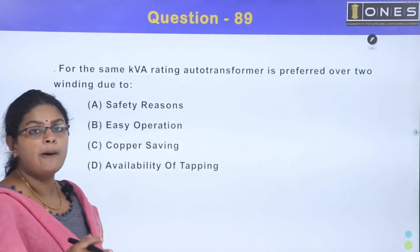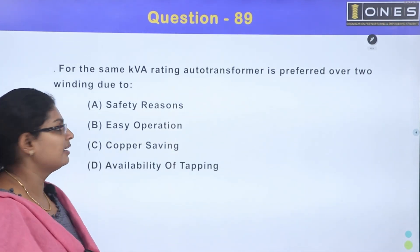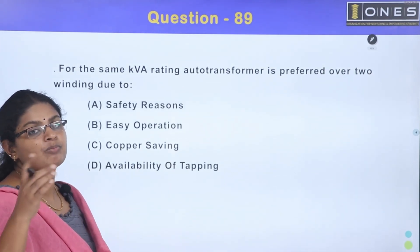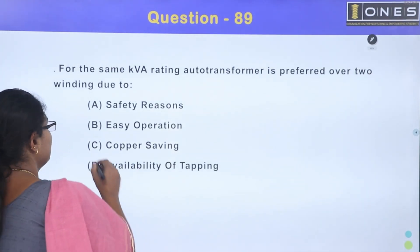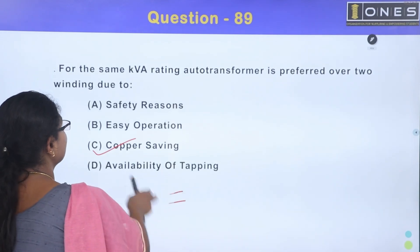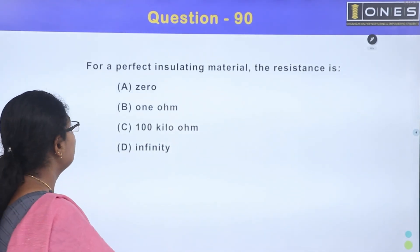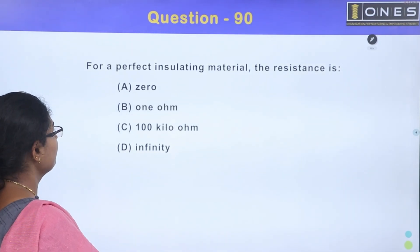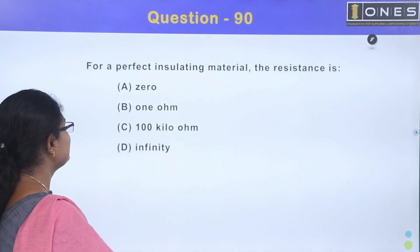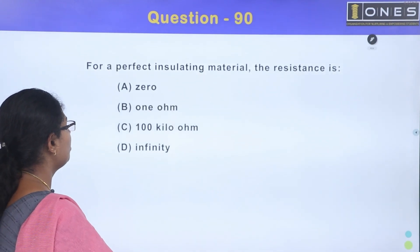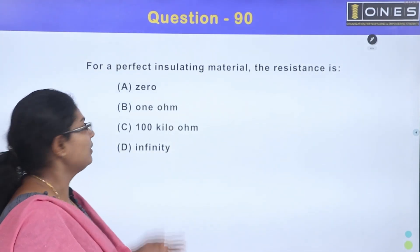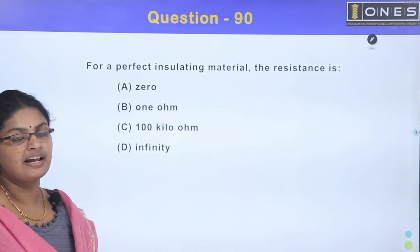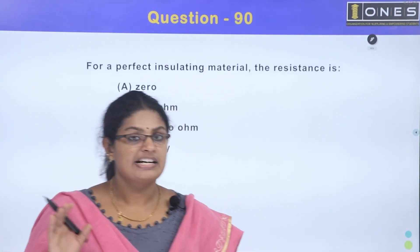For a perfect insulating material, the resistance is: Option A, 0; Option B, 1 ohm; Option C, 100 kilo ohm; Option D, infinity. If we have a perfect insulating material, no current flows through it, so the resistance is infinity. The answer is Option D, infinity.